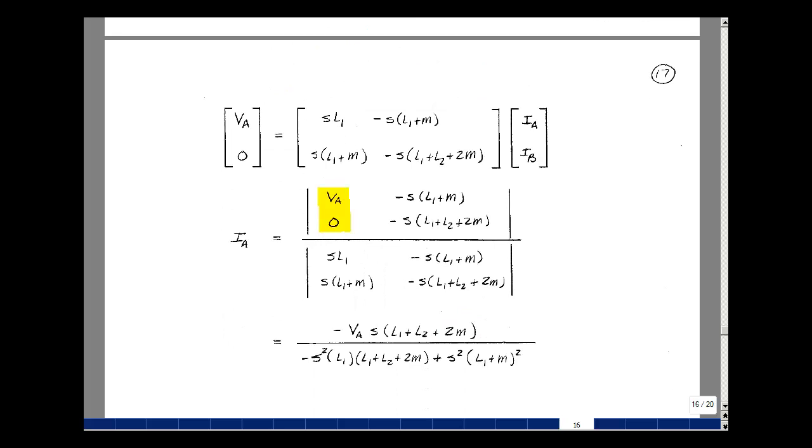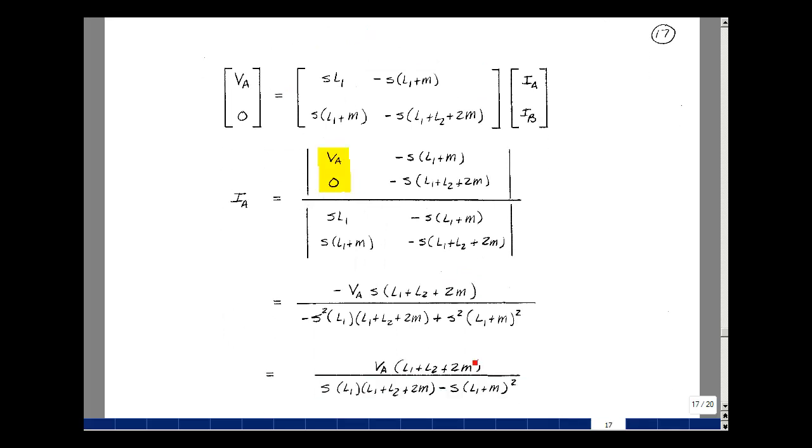Now to find the input impedance, I need to find the current I sub A, which is coming out of the voltage source V sub A. So I'll put this into column one and then repeat the same matrix here for the determinant. Doing Cramer's rule with our numerator and then our denominator matrices. So this times this is equal to this term here. And then I've got this times this minus this times this, and that's this term and then this term.